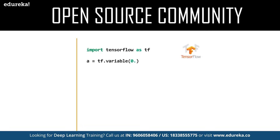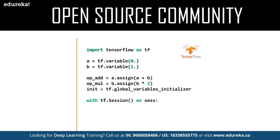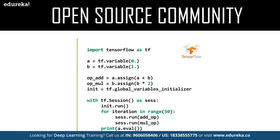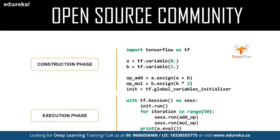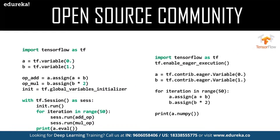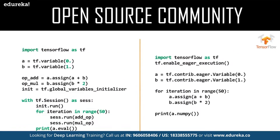A simple TensorFlow program consists of a construction phase and an execution phase. The construction phase is where you build a graph; the execution phase is where you evaluate the graph, create a session, and initialize all variables. As shown in the geometric sequencing example, it is straightforward to execute. TensorFlow 2.0, the latest release, makes this even easier — it has eager execution by default, which simplifies and shortens the program to just a few lines of code.